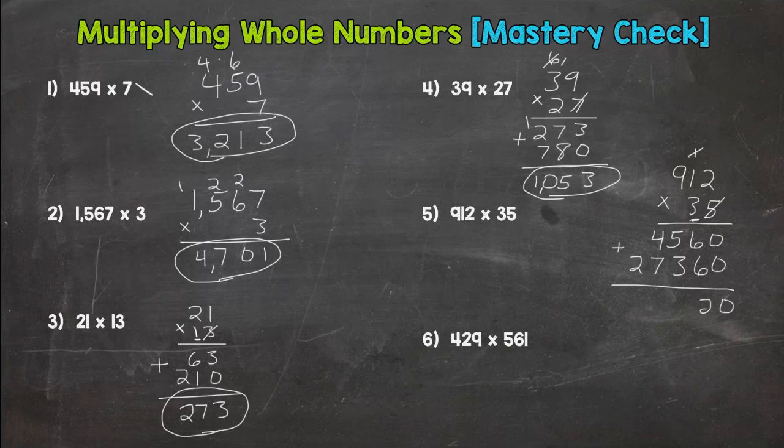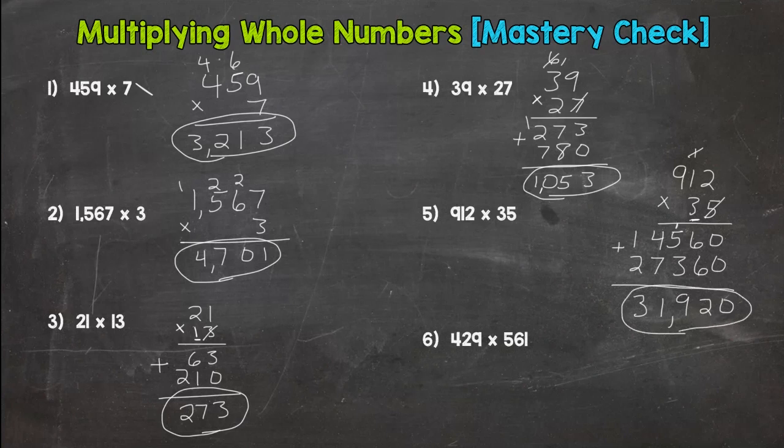Zero, 12. 6 plus 3 is 9. 4 plus 7 is 11, and then 3. So 31,920. If I'm going too fast as I go through there, go ahead and press pause, check my work with yours. That's fine.